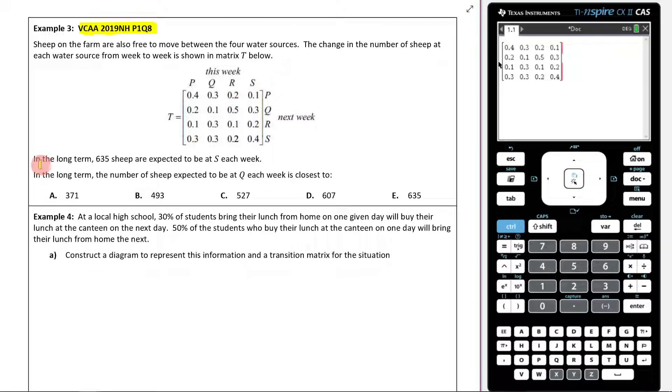In the long term, 635 sheep are expected to be at S each week. In the long term, the number of sheep expected to be at Q each week is closest to which of the following. The first thing to take note of here is the word in the long term. What that is saying to us is find the steady state. You need to recognize when the steady state is going to come up, and when they're using language like in the long term, that's a very good indication.